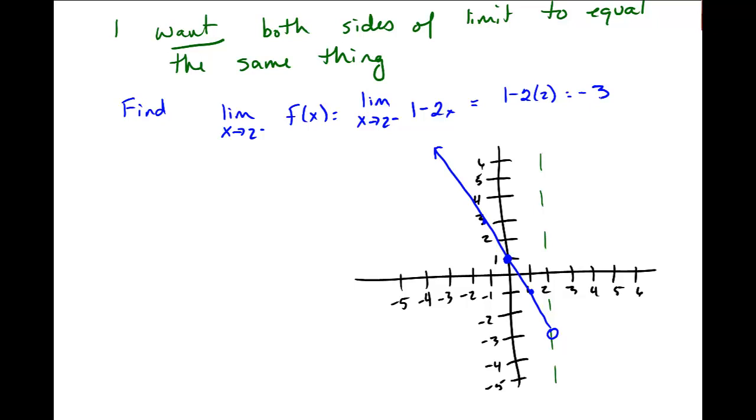Now I want the limit from the right to be the same. So I want the limit as x approaches 2 from the right of this right-sided function, ax squared plus 2x minus 3, to also be equal to negative 3. That's what I want the limit to be. Well, I know how to take the limit of this, again a polynomial. I just plug in 2. So I have a, I'll plug in the value 2.